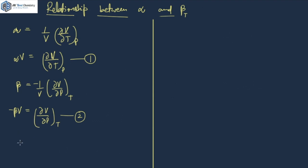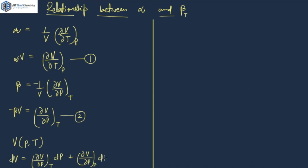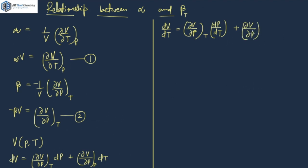Now I am going to use the property of a state function. Volume is a function of pressure and temperature, and being a state function, I can write dV as: del V by del P at constant T, times dP, plus del V by del T at constant P, times dT. This is how we write any state function equation in terms of the two variables on which it depends. Now I am going to divide this equation by dT, giving dV by dT equals del V by del P at constant T times dP by dT, plus del V by del T at constant P times dT by dT.